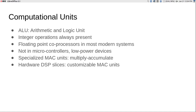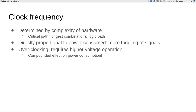Computational units also include specialized MAC — multiply accumulate — units that are often found especially for signal processing applications. In FPGAs we come across something called a DSP slice; they are called DSP slices because the primary use is to implement multiply accumulate units, but in general you can think of them as a hardware unit capable of doing multiplication. Clock frequency is the maximum speed at which a system can operate, typically determined by the complexity of the hardware — the critical path, which is the longest combinational logic path through the gates. The higher the clock frequency, the more power is consumed in general, because other signals also toggle at a rate proportional to the clock.